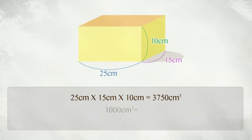To convert this to liters, you need to divide 3,750 by 1,000. The volume of the box is 3.75 liters.